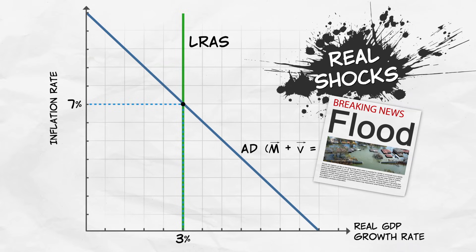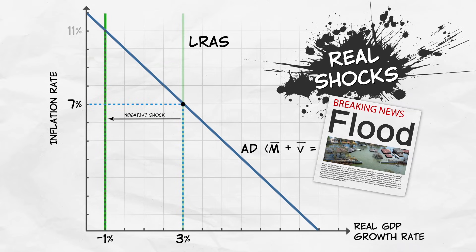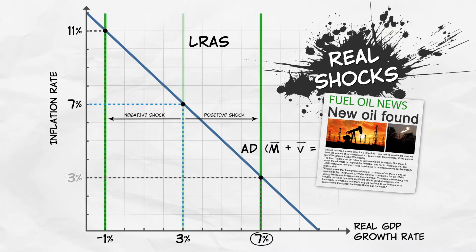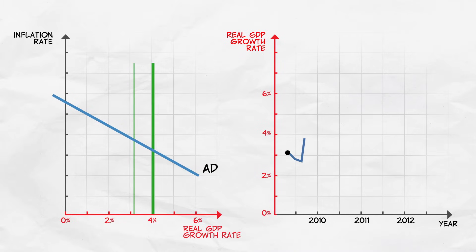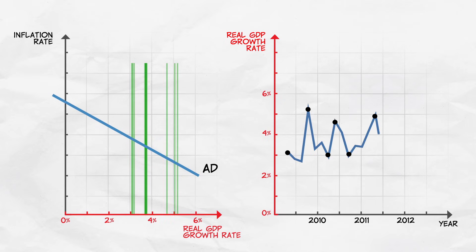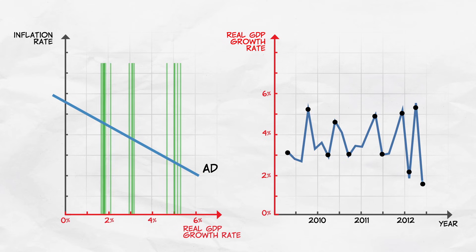Now, how would a real shock be represented in our AD-AS model? A negative shock shifts the long-run aggregate supply curve to the left, which lowers growth and increases the inflation rate. A positive shock shifts the long-run aggregate supply curve to the right, which increases growth and reduces the inflation rate. Of course, an economy is experiencing lots of positive and negative shocks all the time, and over time we'll see a process that looks like this. So now we have one source of business fluctuations: real shocks — shocks that shift the long-run aggregate supply curve.